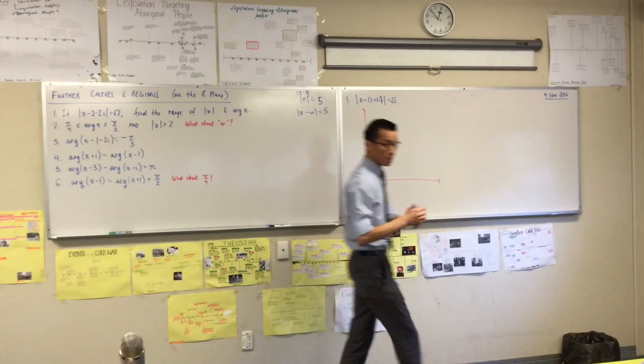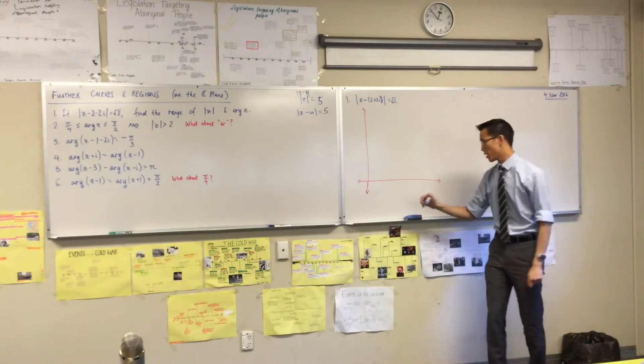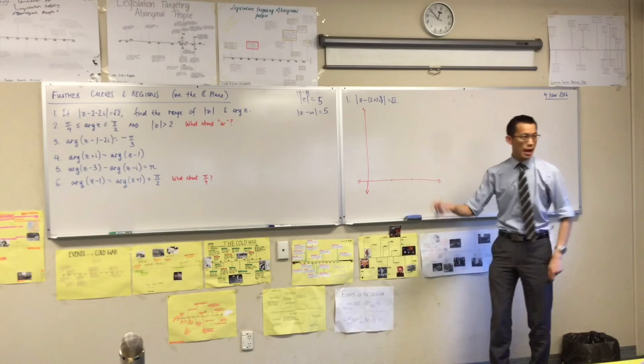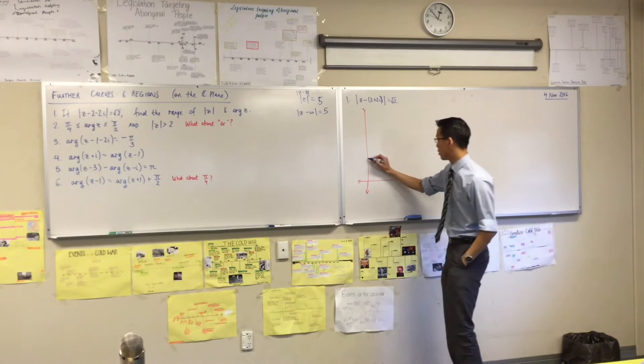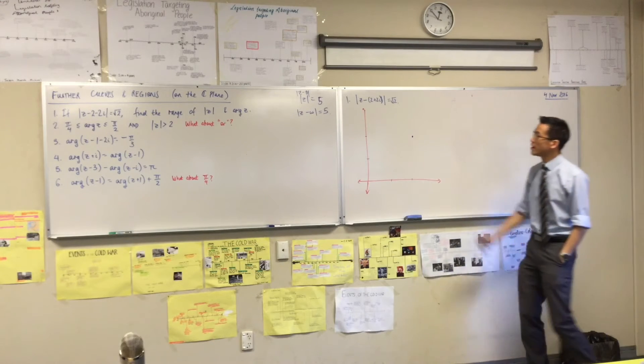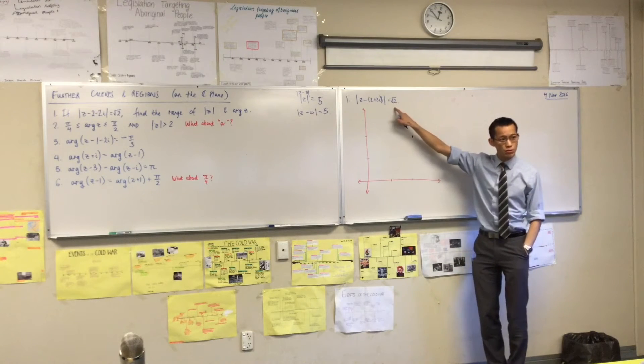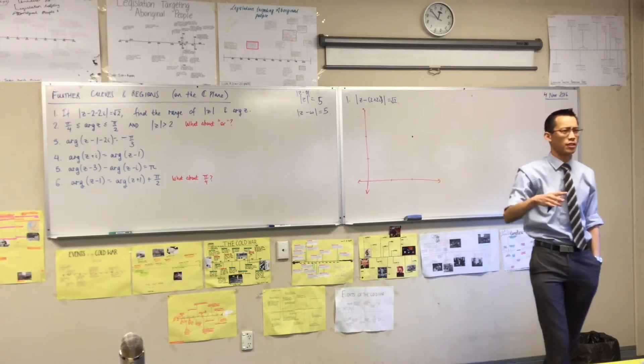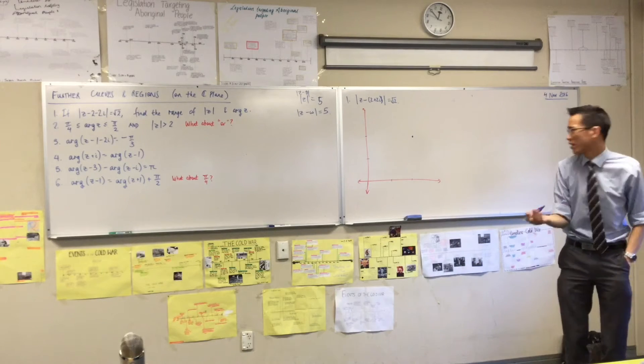2 plus 2i, that tells you, go two units this way, one, two, and then go two units up, one, two. So now I know, there's my center. Now your radius of root 2, what is root 2 roughly? You only need to do a roughly 1.4. About 1.4. So if I go this, that's one away from the center, 1.4 is going to be like a little bit further.